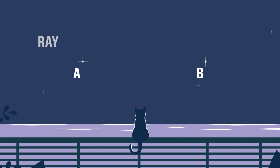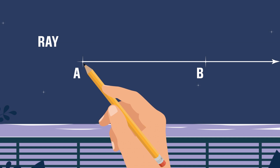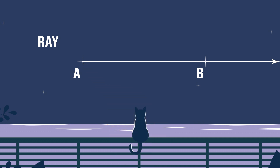What is a ray? A ray is part of a line that has one endpoint and goes on forever in the other direction.